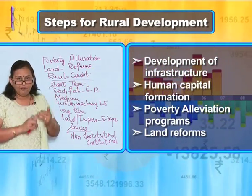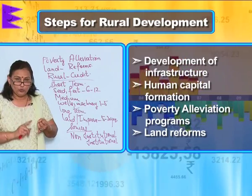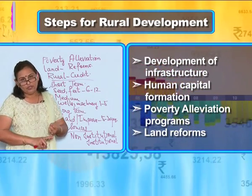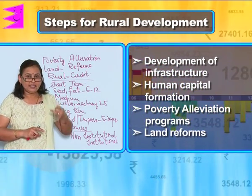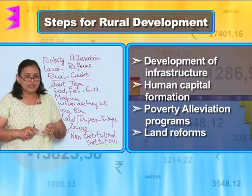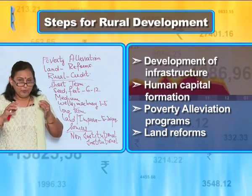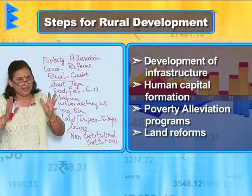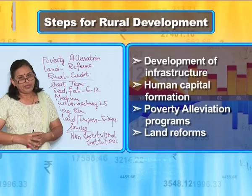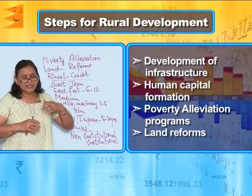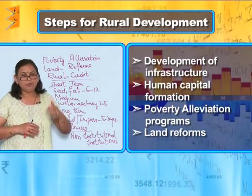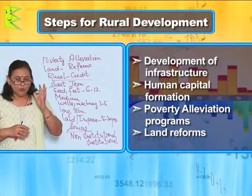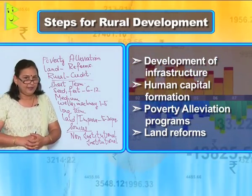So the reforms have to be made that those who till the land, the land belongs to them, and certain steps which improve the condition of landless farmers in India are required. These are the steps required for rural development in India.